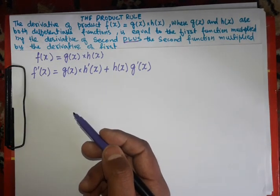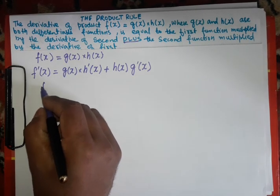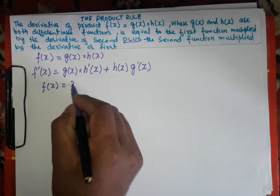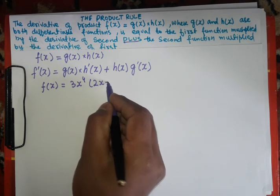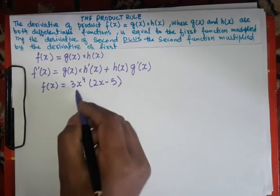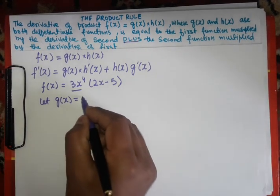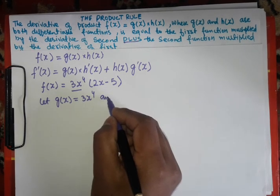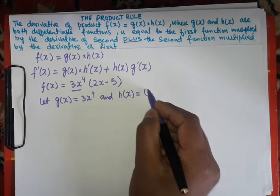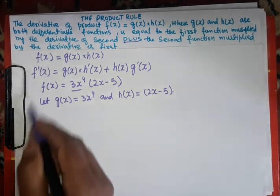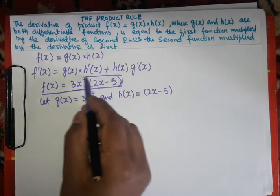If we have an example like f(x) is equal to 3x to the power 4 times (2x minus 5), what will we do? We will write this as: let g(x) equal to 3x to the power 4, and h(x) equal to 2x minus 5. Now we have to differentiate this function using the product rule.